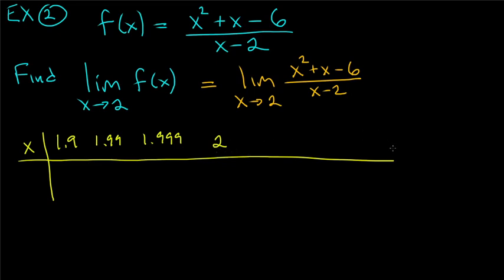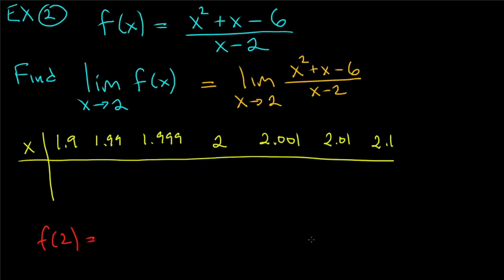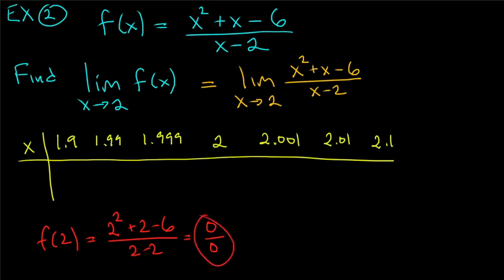Let's skip straight to x values: from the left, 1.9, 1.99, 1.999; from the right, 2.1, 2.01, 2.001. We don't care what happens at x = 2. In fact, if you try plugging in 2, you get (4+2−6)/(2−2) = 0/0, which is not a number — that's the dreaded 0 over 0.